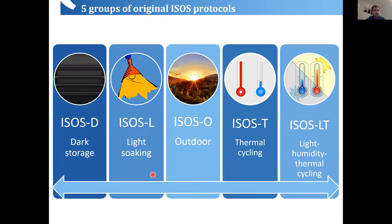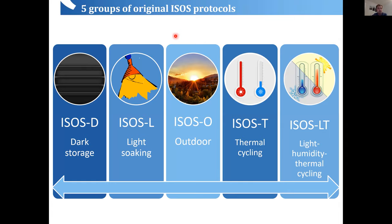ISOS introduces five different families of experiment, abbreviated with one letter — D for dark storage, L for light soaking, outdoor experiments, thermal cycling, and light-humidity-thermal cycling. Outdoor testing is standalone because it reflects what actually happens to a solar module, but it's difficult to work with at the research level because conditions are always different. The rest of the tests are somehow accelerated compared to what you see outdoors.